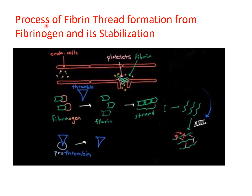Let's talk about the process of fibrin thread formation from fibrinogen and its stabilization. The breach in the endothelium has produced platelet plug formation, and the intrinsic or extrinsic cascade has led to formation of prothrombin activator. The prothrombin present in plasma, when acted upon by prothrombin activator, converts to thrombin. This thrombin then acts on fibrinogen. Fibrinogen, like prothrombin, is a beta globulin, and certain amino acids are removed by thrombin so that fibrin monomers are formed.